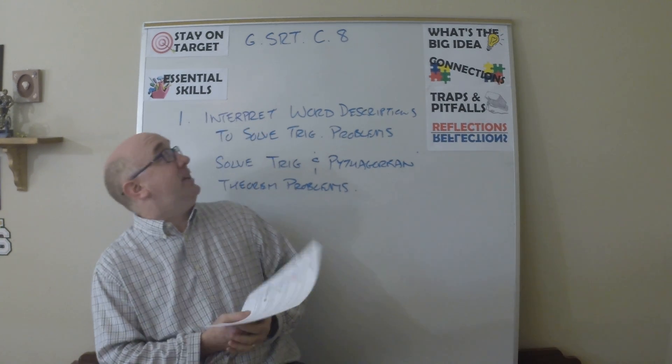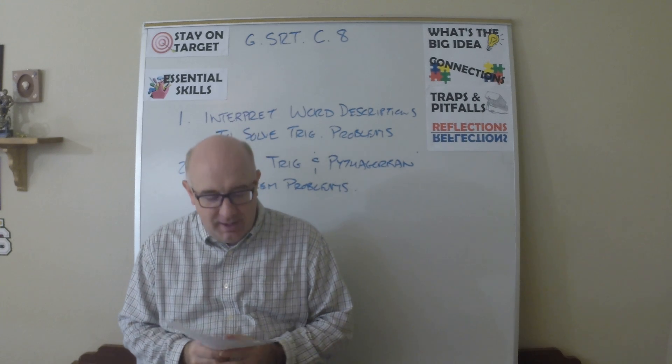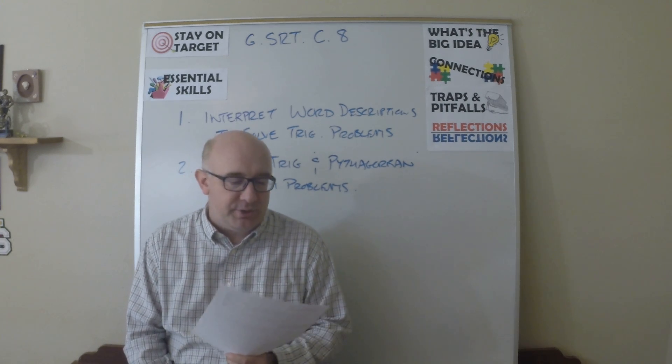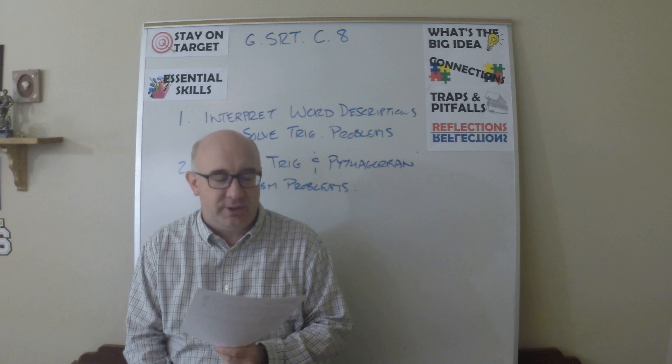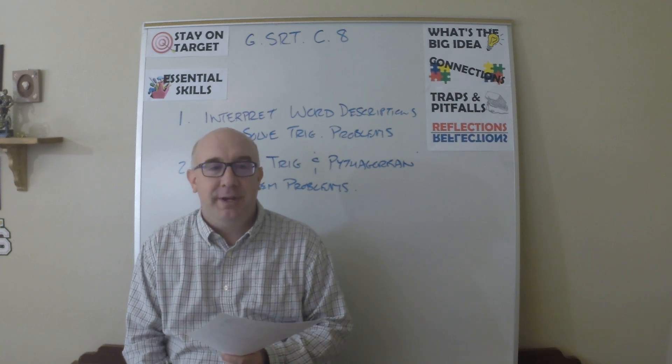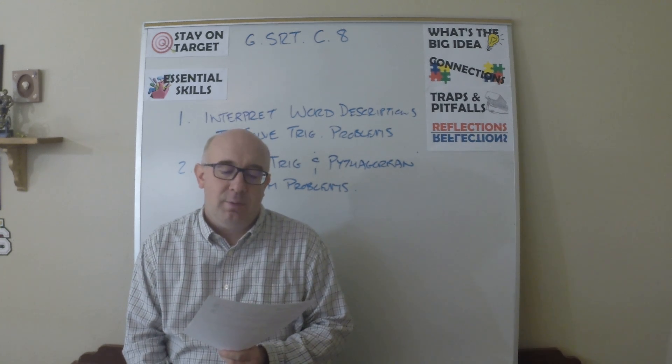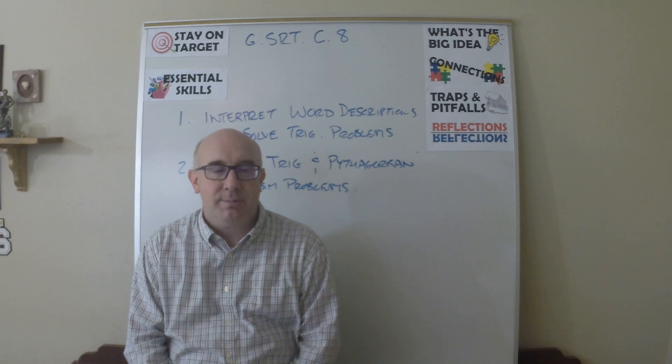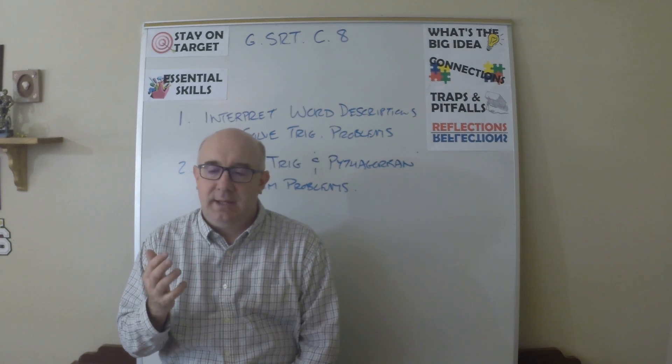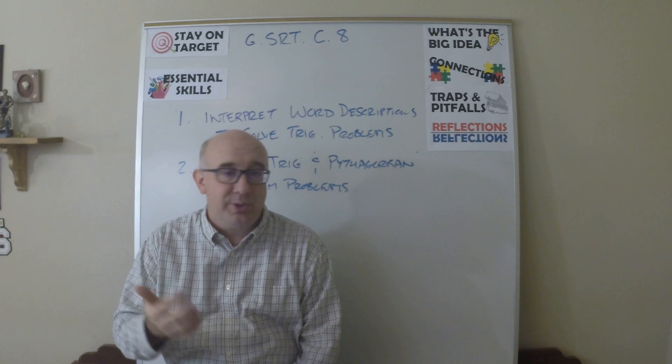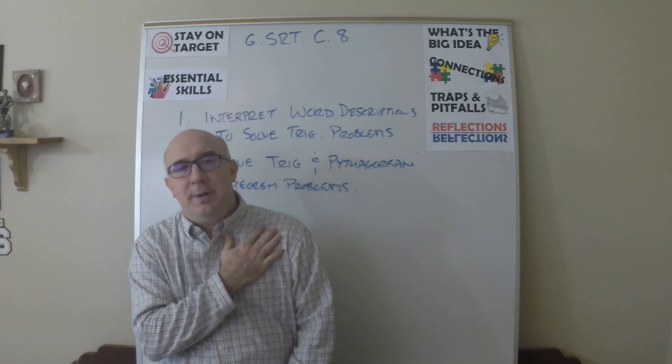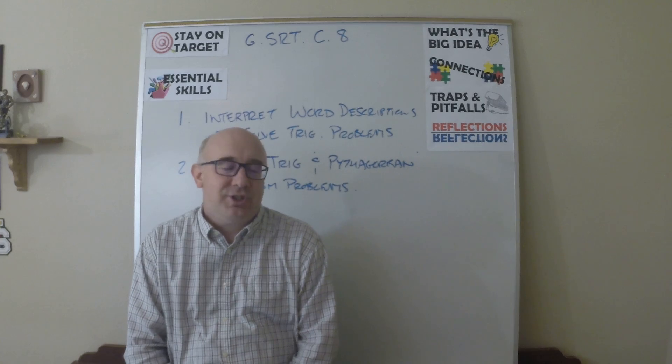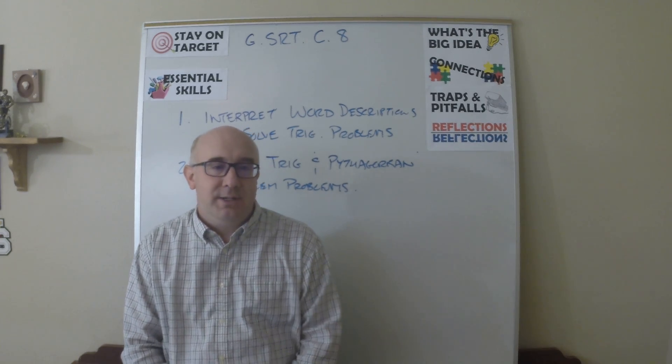All right, let's take a look at GSRTC8. This is a very simple standard. It says use trig ratios and the Pythagorean theorem to solve right triangles in applied problems. So this is where we just take the mechanics of knowing sine, cosine, and tangent and our friend the Pythagorean theorem and just solve word problems, really.